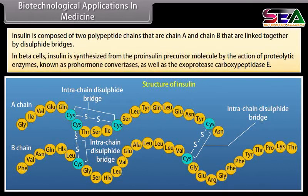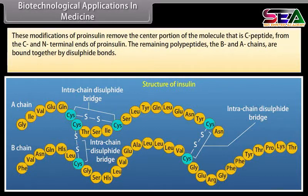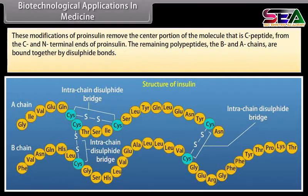In beta cells, insulin is synthesized from the pro-insulin precursor molecule by the action of proteolytic enzymes known as pro-hormone convertases as well as exoprotease carboxypeptidase E. These modifications of pro-insulin remove the center portion of the molecule, the C-peptide, from the C and N-terminal ends of pro-insulin. The remaining polypeptides, the B and A chains, are bound together by disulfide bonds. The C-peptide is not present in the mature insulin.